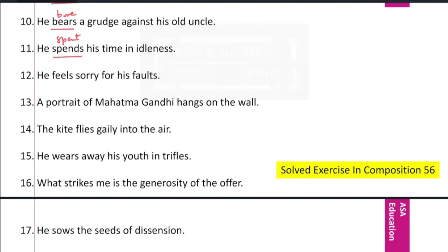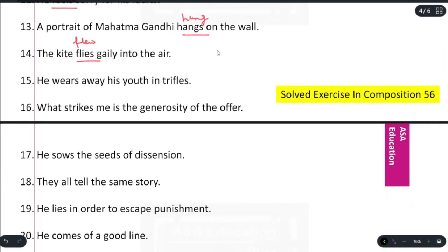He feels sorry for his faults. He felt sorry for his faults. A portrait of Mahatma Gandhi hangs on the wall. A portrait of Mahatma Gandhi hung on the wall. The kite flies gaily into the air. The kite flew gaily into the air.